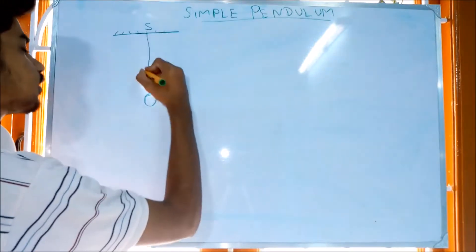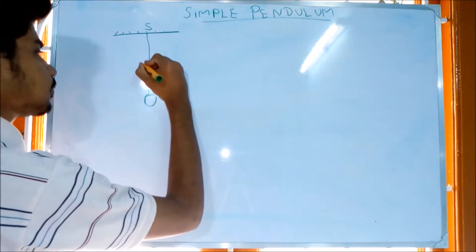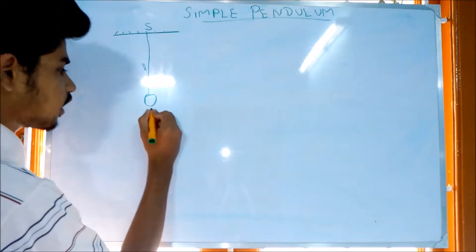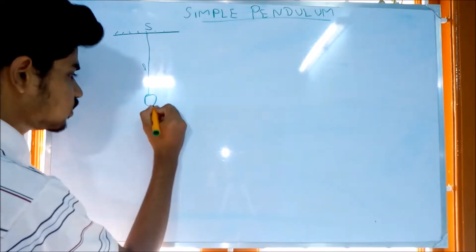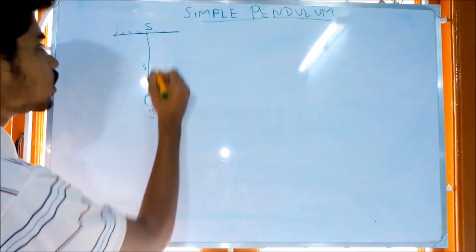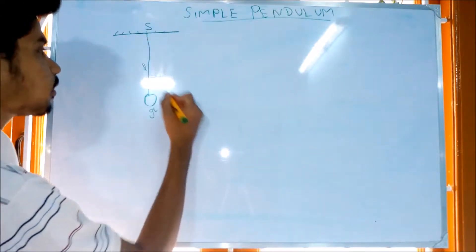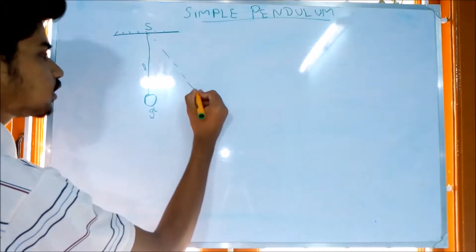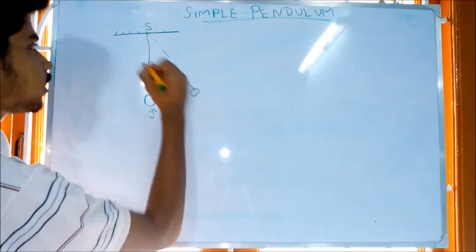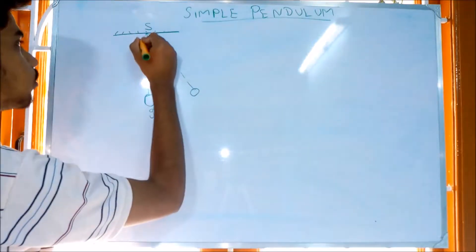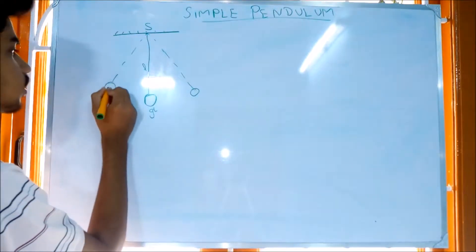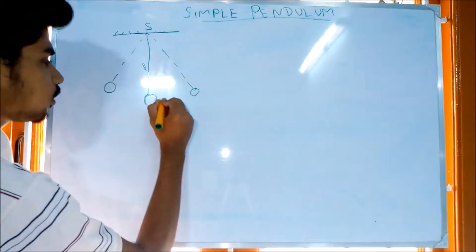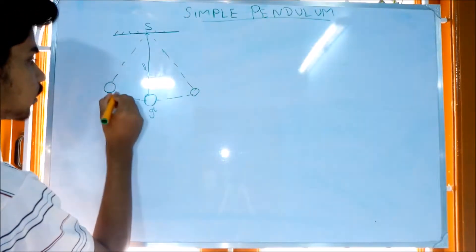Let's say the length of the string is L. Gravity and force act on the pendulum. Now if you look at the surface, here we can identify the forces acting.